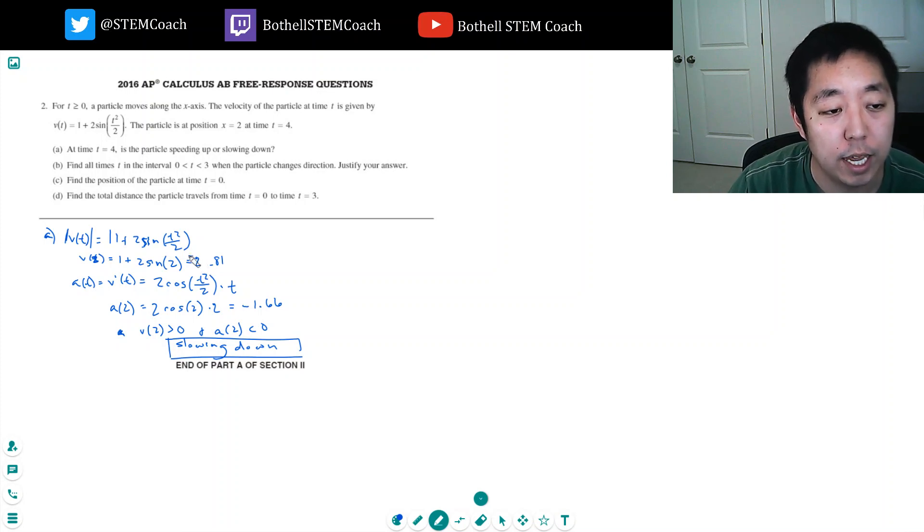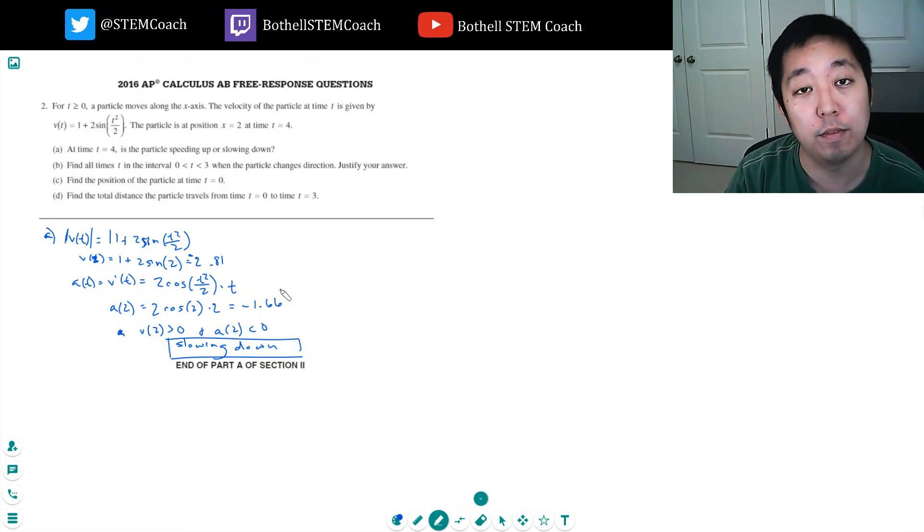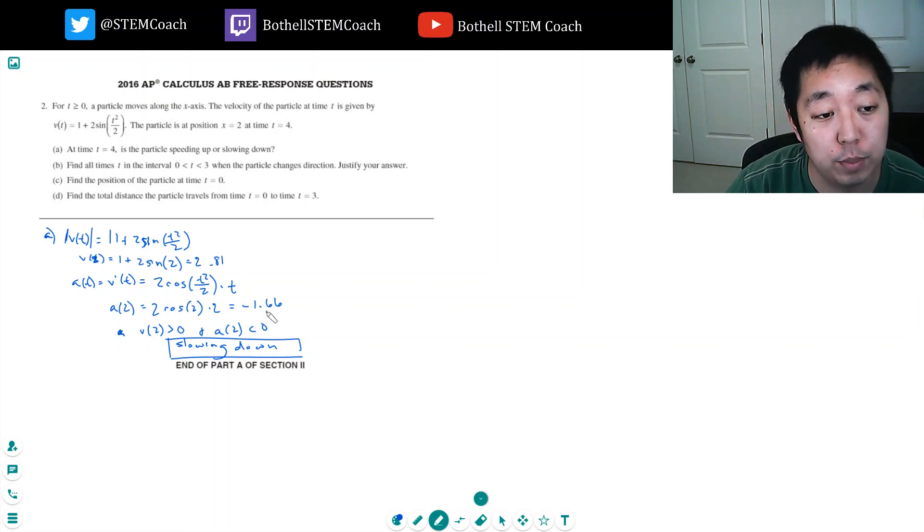If this ended up being negative 2.81, then an acceleration of negative would make it means it's going more negative or going faster in the negative direction. So it's actually important to highlight whether or not the velocity is initially negative or not. Because just by acceleration alone, that only tells you if the velocity is going more positive or more negative, but not telling you if it's speeding up or slowing down.